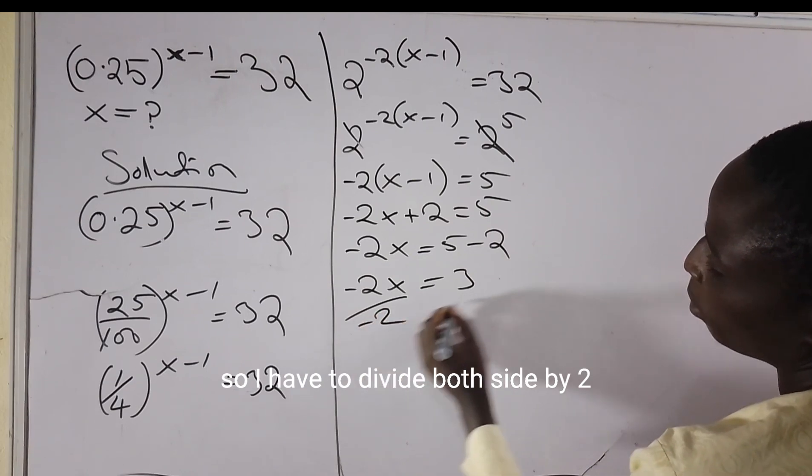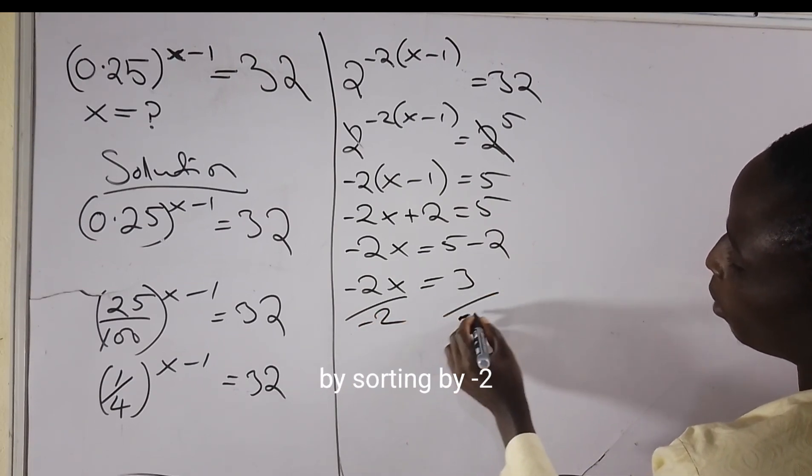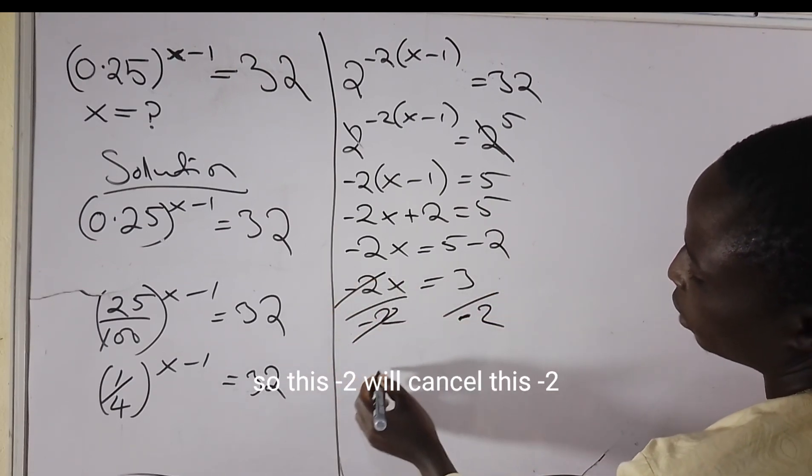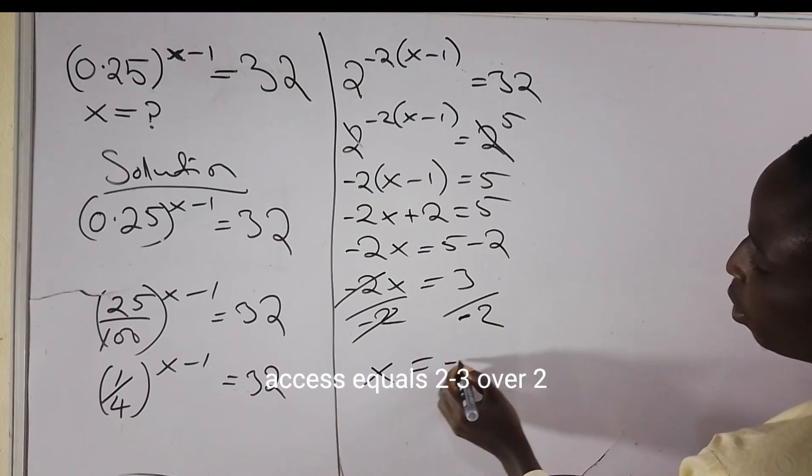I have to divide both sides by minus 2. This minus 2 will cancel, so x equals minus 3 over 2. Thank you so much.